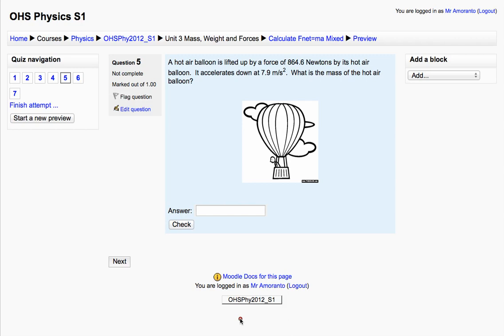Okay, so the question is: a hot air balloon is lifted up by a force of 864.6 Newtons by its hot air balloon. It accelerates down at 7.9 meters per second squared. What is the mass of the hot air balloon?